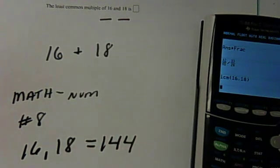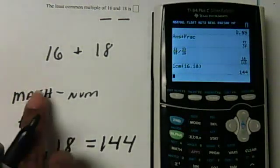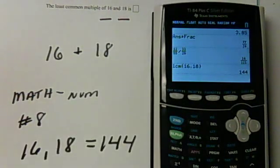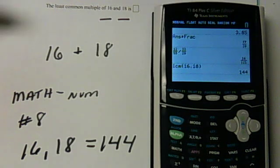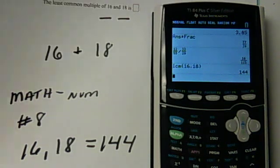Fairly simple. What that does is keep you from having to list all the multiples of 16 until you get to 144 and all the multiples of 18 until you get to 144. Let's do a couple more examples.